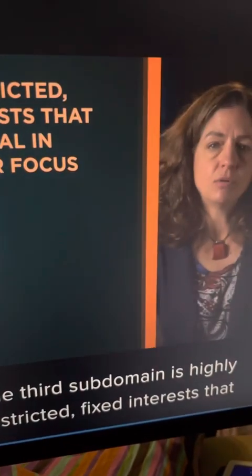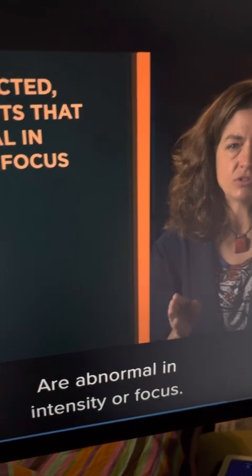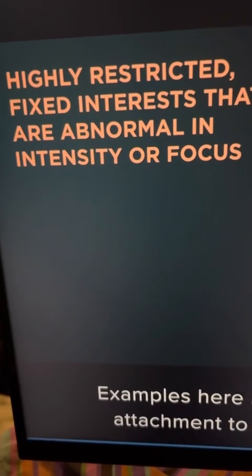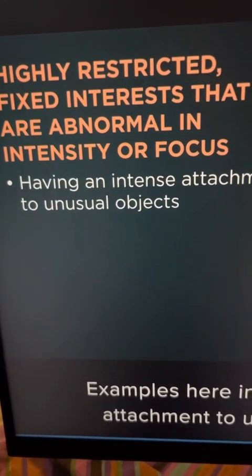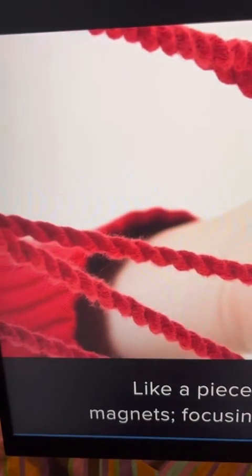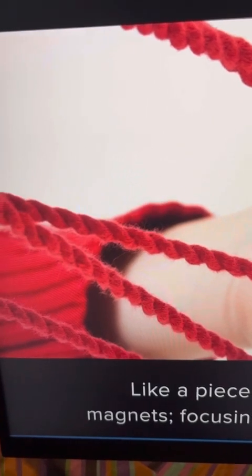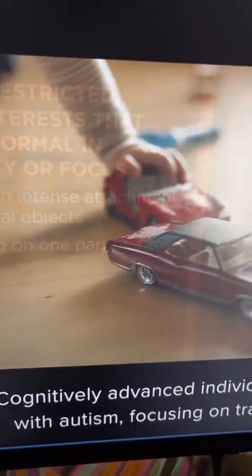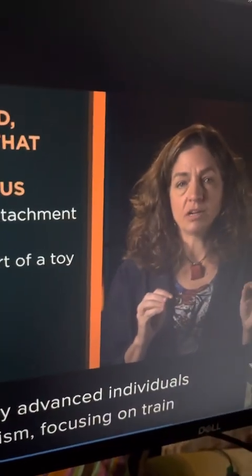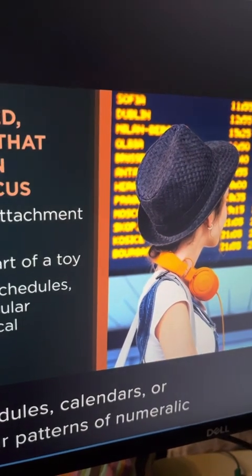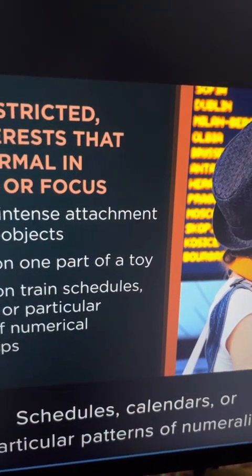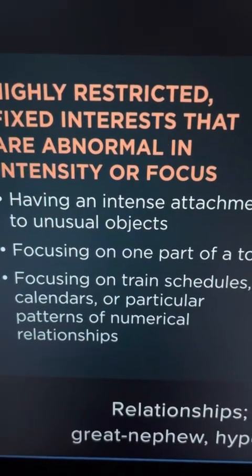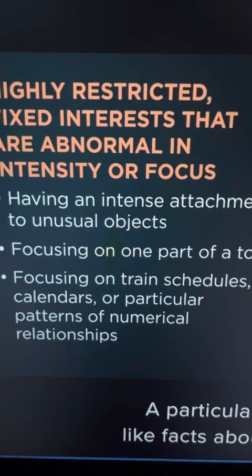The third subdomain is highly restricted, fixed interests that are abnormal in intensity or focus. Examples include an intense attachment to unusual objects like a piece of string or magnets, focusing on one part of a toy such as spinning the wheels on a toy truck. For more cognitively advanced individuals with autism, this may involve focusing on train schedules, calendars, or particular patterns of numerical relationships — or, like my great-nephew, hyper-focusing on a particular topic like facts about space.